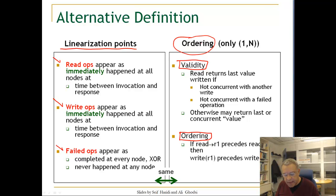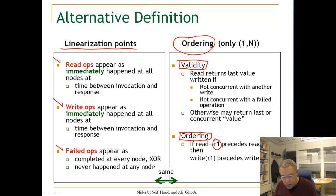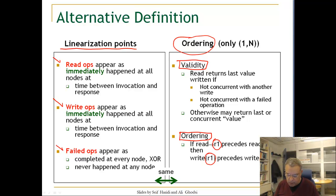Ordering says that if a read that produces the value R1 precedes a read that produces the value R2, then the write that wrote R1 should complete and precede the write of R2. This makes sense when we are talking about a single writer. It is easy to see that if we have linearization points, the ordering property holds.